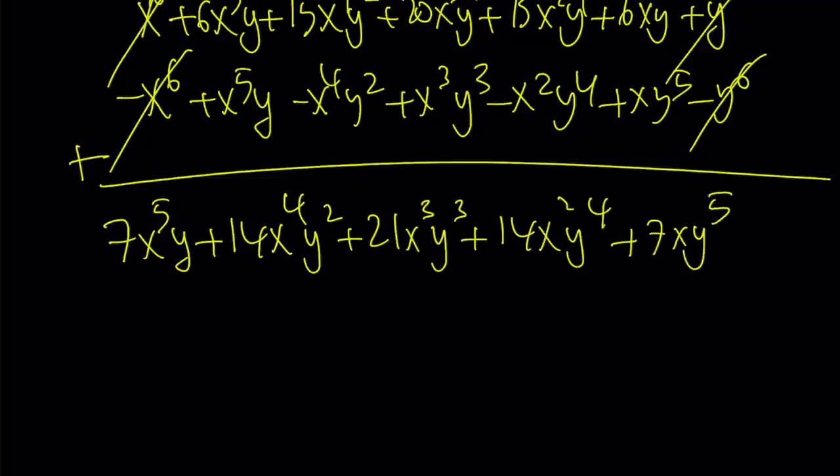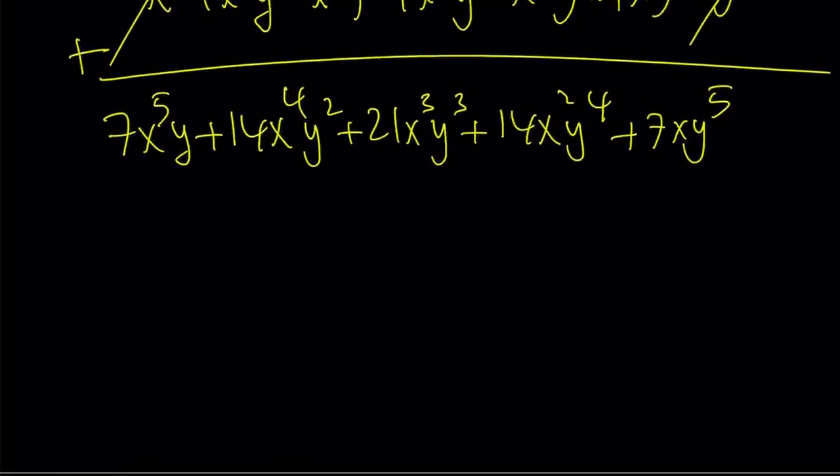We have that nice symmetry where the coefficients are equal when they're the same distance from the center, and the powers alternate. This is still a handful expression, so let's see how we can simplify this. Obviously we can factor out a seven x y, which is kind of cool.